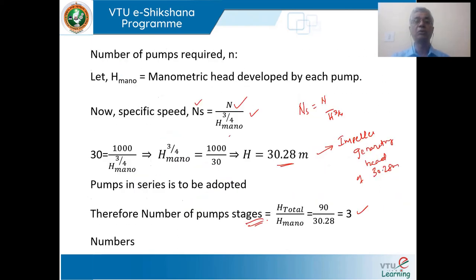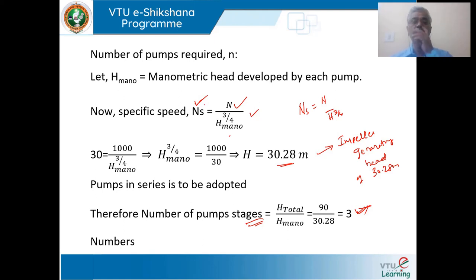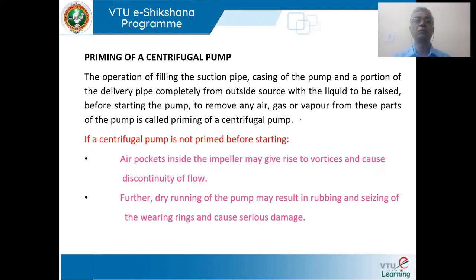This field problem illustrates how to determine the stage of pump required: use the specific speed formula N_s = N / H^(3/4). Knowing the pump's specific speed from the market (N_s = 30) and required total head (90 m), calculate the head per stage and divide to find the number of stages. Such calculations are commonly required when engineers design centrifugal pump systems for buildings or industrial use.